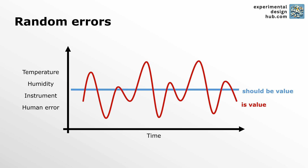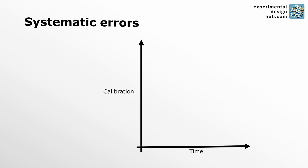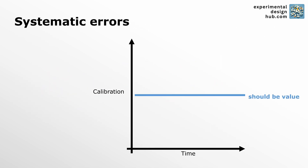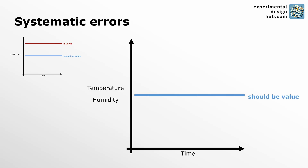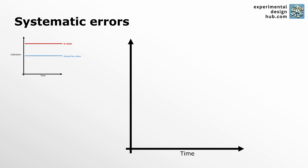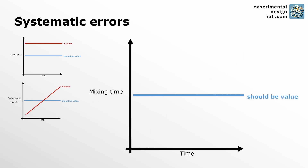In contrast, we have systematic errors, which are consistent and repeatable errors that occur due to flaws in your experimental setup or procedure. Systematic errors are more problematic than random errors because they bias your experimental results and they are often harder to detect and correct.